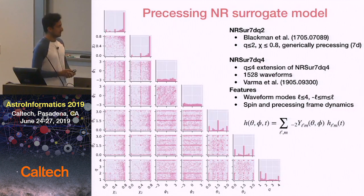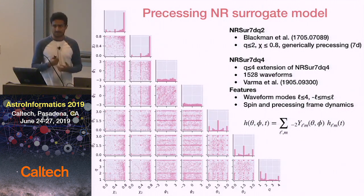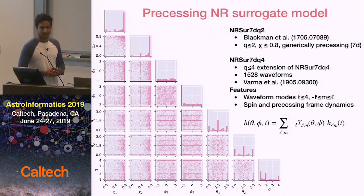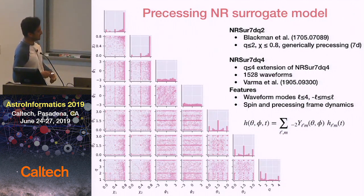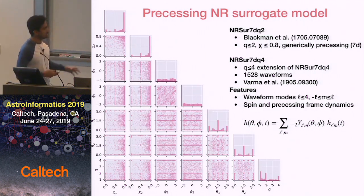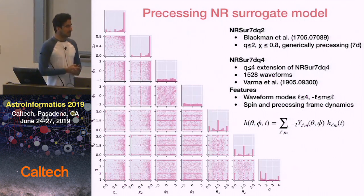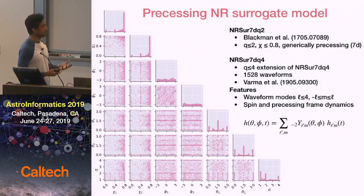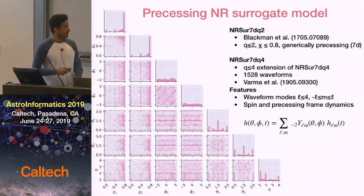Because precession involves two generically oriented spin vectors plus the mass ratio, it's a seven-dimensional problem. We used 1,500 numerical relativity simulations — each of which took a month on a supercomputer — and then built an interpolant between all of them. Here is a corner plot showing all the simulations across the seven dimensions: the mass ratio and the different spin components. The seven-dimensional fit is done using different methods including Gaussian process regression, with all details available in the paper.